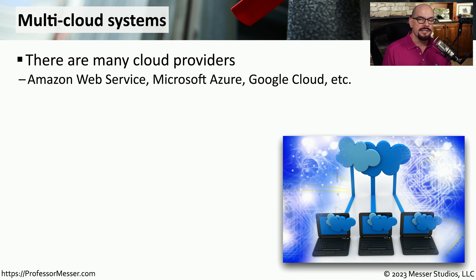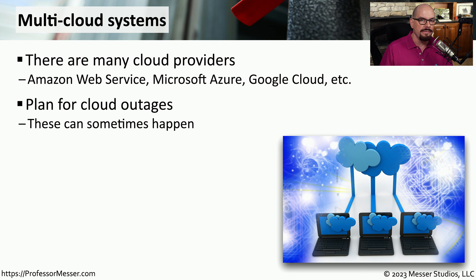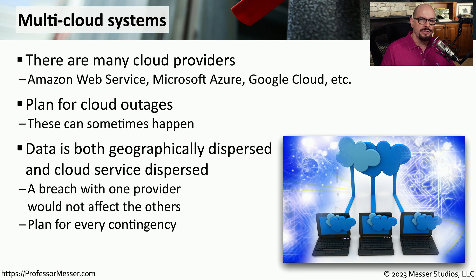We can also provide resilience in the cloud itself. There's not just one single cloud provider — we might be using Amazon Web Services, Microsoft Azure, or Google Cloud. All of these cloud providers have their own processes and procedures, and if there's an outage with one cloud provider, that generally does not affect other providers. Ideally, if there is an outage with one provider, we might have similar services available on a separate provider. We could provide application services from multiple cloud providers and have data in different locations as well. This is also important from a security perspective — having information with different cloud providers may provide uptime and availability that wouldn't be there if we were only using a single provider.